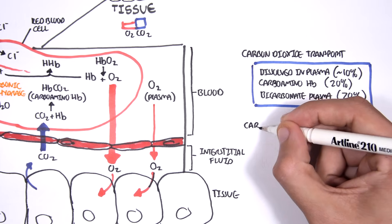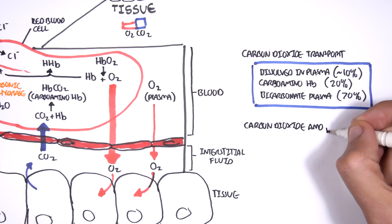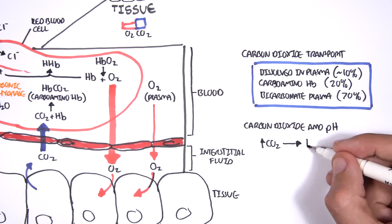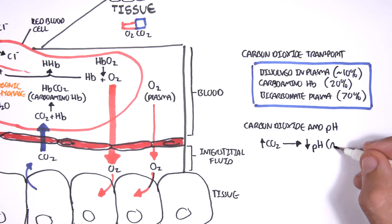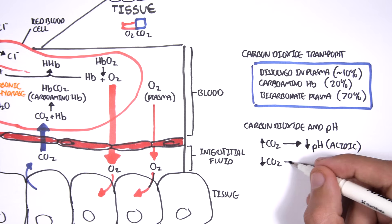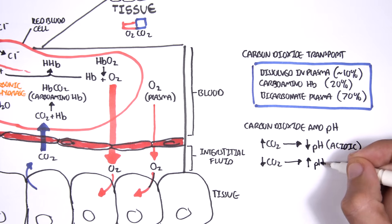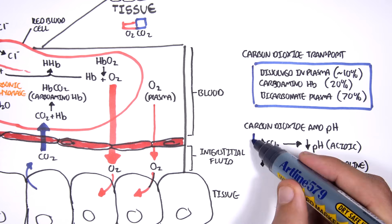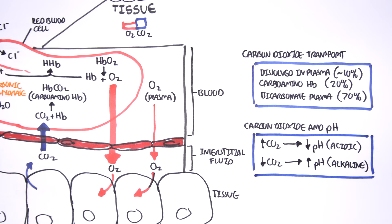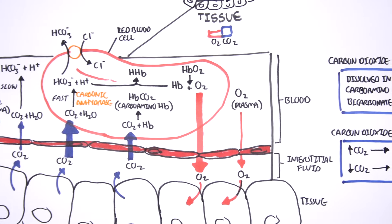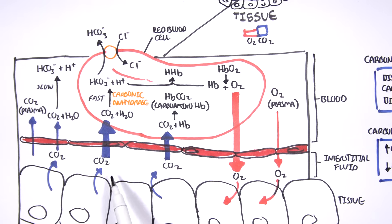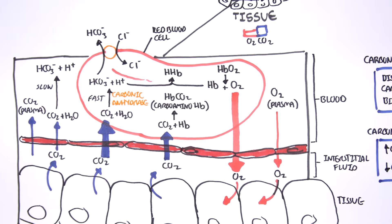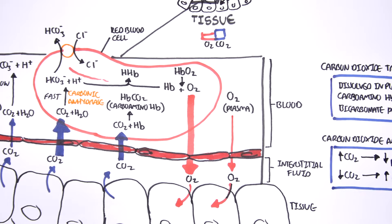It's important to understand that carbon dioxide and pH are closely related. If we have an increase in carbon dioxide, this will cause a decrease in pH, making the blood acidic. A decrease in carbon dioxide will make the blood more alkaline — an increase in pH. This is because more carbon dioxide shifts the reaction to form more bicarbonate and hydrogen ions, and more hydrogen ions means more acidity.